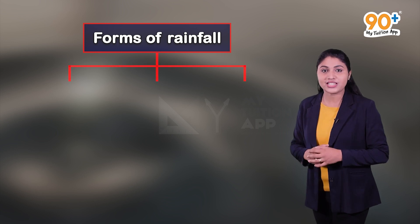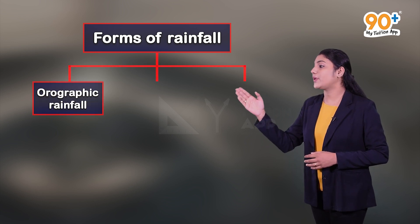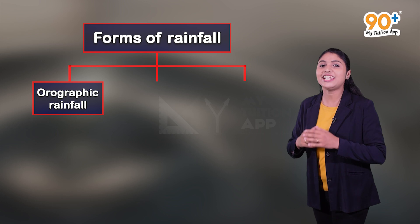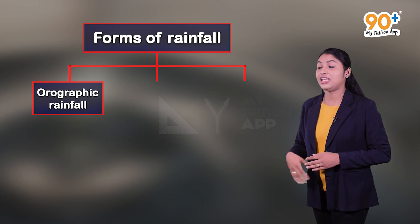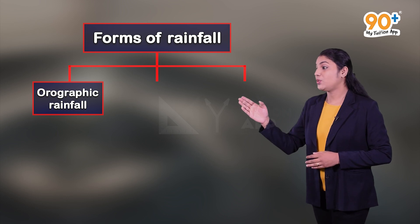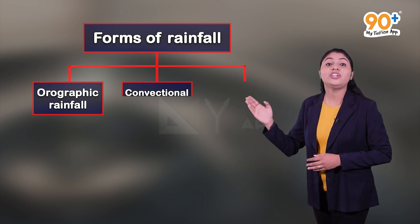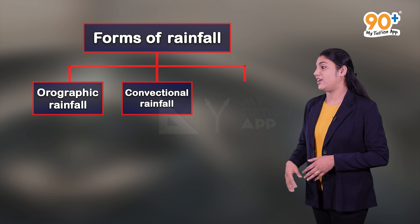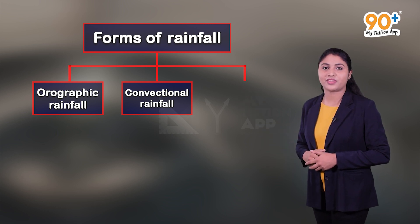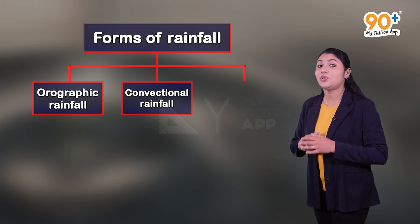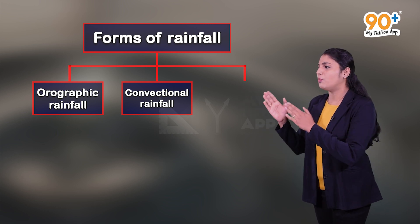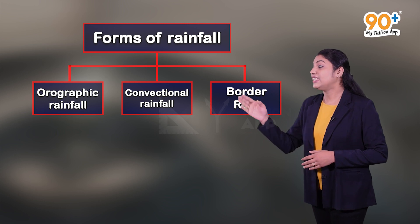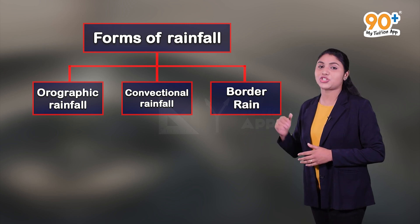The first one is orographic rainfall, also known as shayilavirishti. The second one is convectional rainfall, also known as samvahanavrishti. And the third one is border rain, also known as tiradesavirishti.